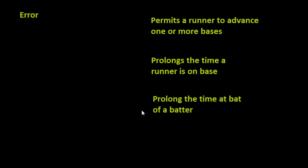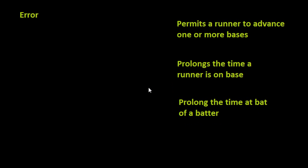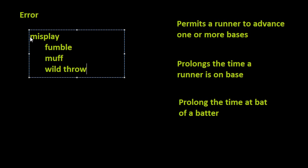In order for an error to be charged, it has to fall into one of those three categories. So how would the defensive team allow this to happen? These are three things they're really trying to prevent. What the rules say is that it has to be a misplay by the defensive team, and it breaks that down even further by saying it can be a fumble, a muff, or a wild throw.